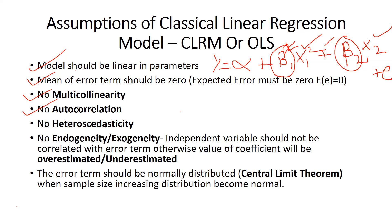Next is no autocorrelation. Multicollinearity means all the independent variables should not be correlated to each other. Autocorrelation means when one particular variable is correlated with its own past values — that is known as autocorrelation. In time series, when a variable is correlated with its previous year values, that is autocorrelation.